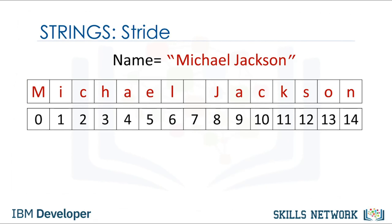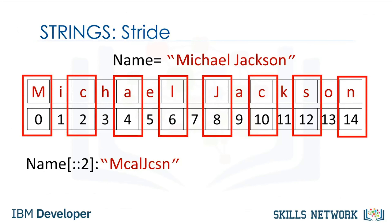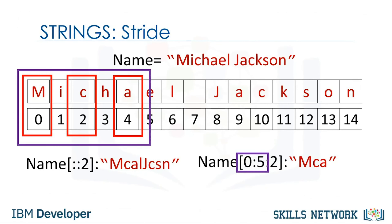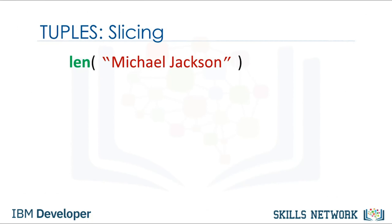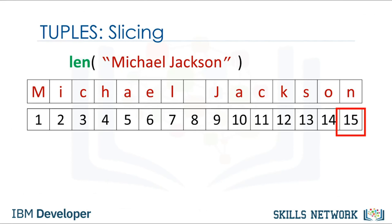It is helpful to think of a string as a list or tuple. We can treat the string as a sequence and perform sequence operations. We can also input a stride value — the 2 indicates we'd select every second variable. We can also incorporate slicing; in this case we return every second value up to index 4. We can use the len command to obtain the length of the string. As there are 15 elements, the result is 15.